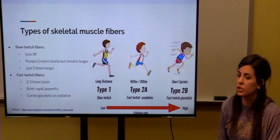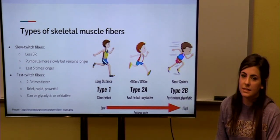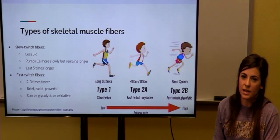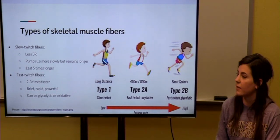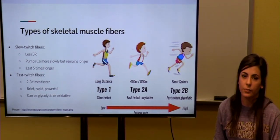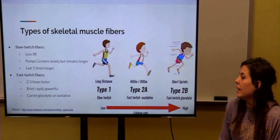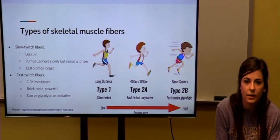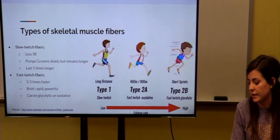Next, we have the fast-twitch fibers, which you see in sprinters. And this is two to three times faster than the slow-twitch fibers, and they are brief and rapid and powerful. And these can either be glycolytic or oxidative.